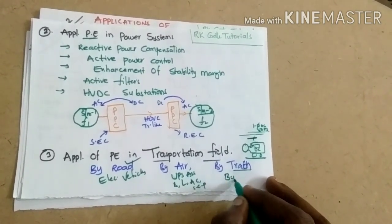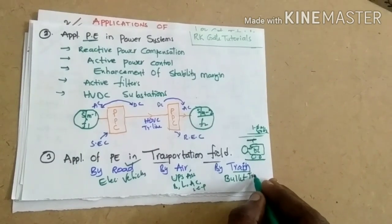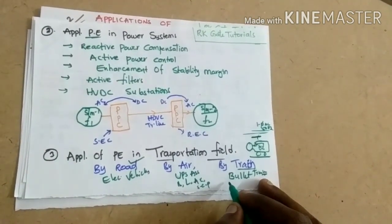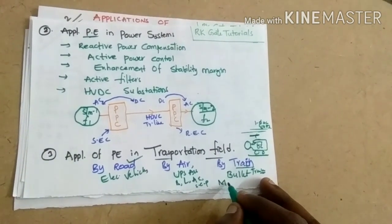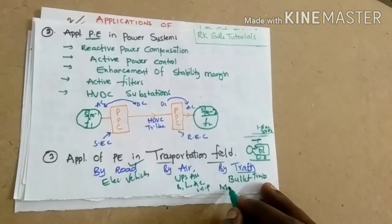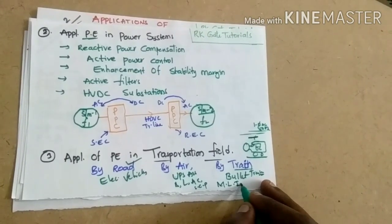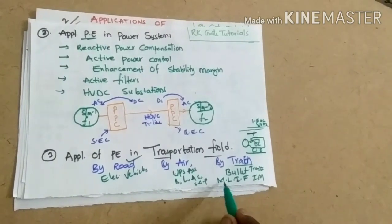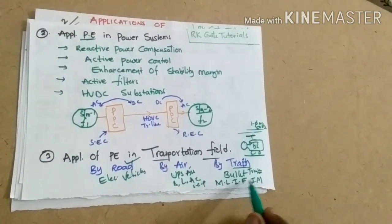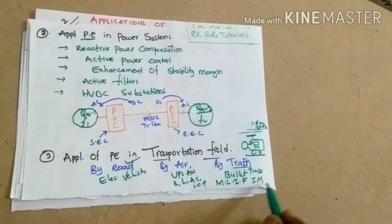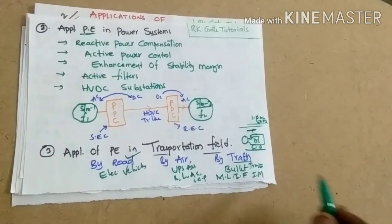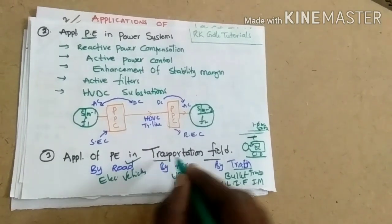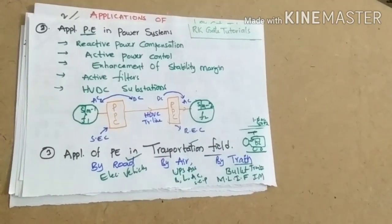Our honorable Prime Minister's dream is to establish a bullet train, which uses a technology called a multilevel inverter fed induction motor instead of using a DC motor. This multilevel inverter fed induction motor technology is also nothing but power electronics. So the application of power electronics in the field of transportation is also covered.